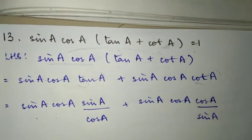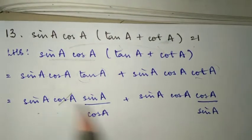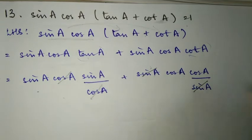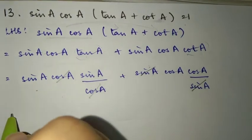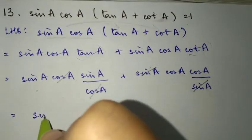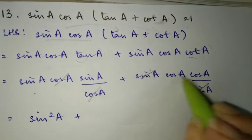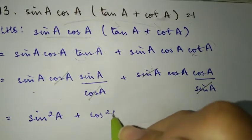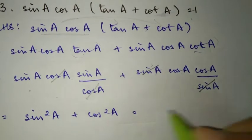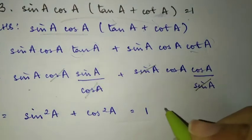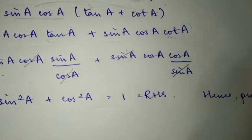After substituting tan and cot, we multiply and cancel. Sin and sin cancel to give sin square A, and cos and cos cancel to give cos square A. So we have sin square A plus cos square A, which according to the formula is equal to 1. That matches the right hand side — hence proved.